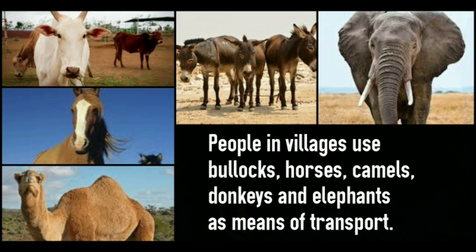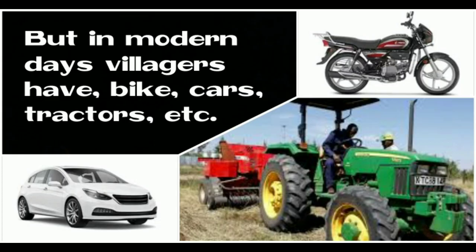In land transport, people in villages use bullocks, horses, camels, donkeys, and elephants as means of transport. But in modern days, villagers also have bikes, cars, and tractors. Nowadays the people who live in villages also use different types of bikes, cars, and tractors.